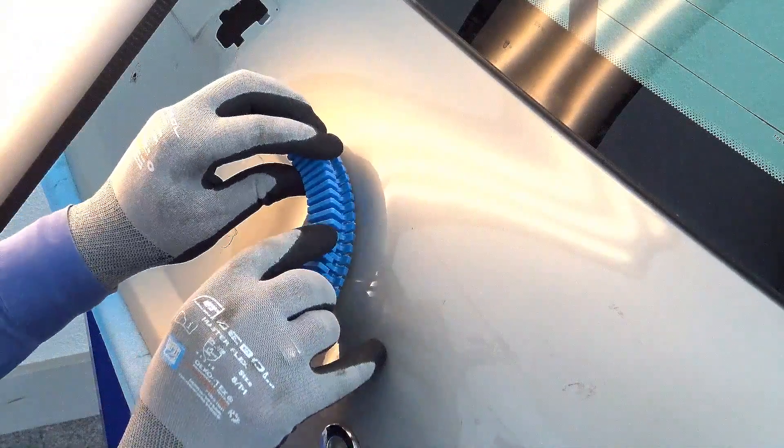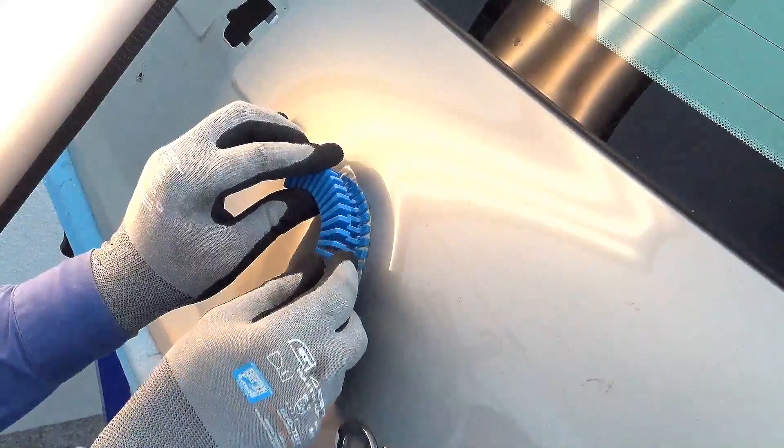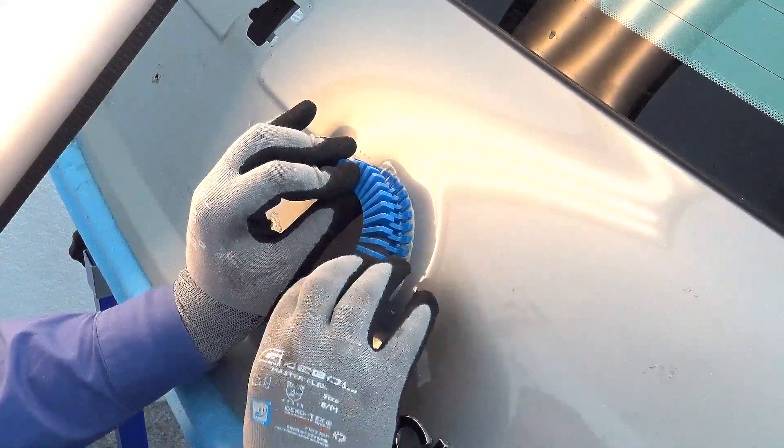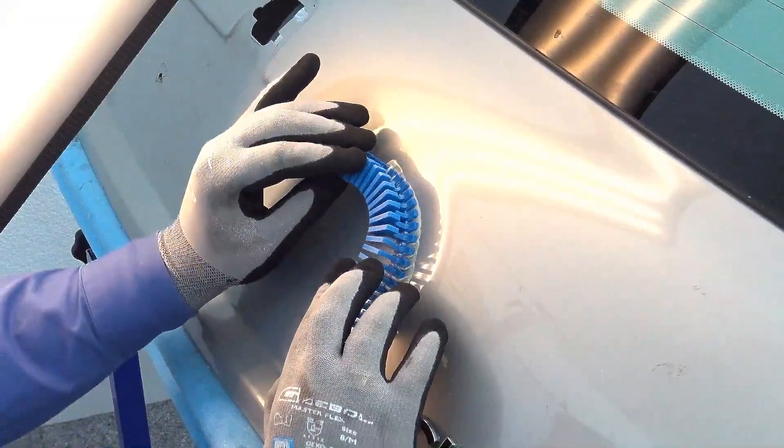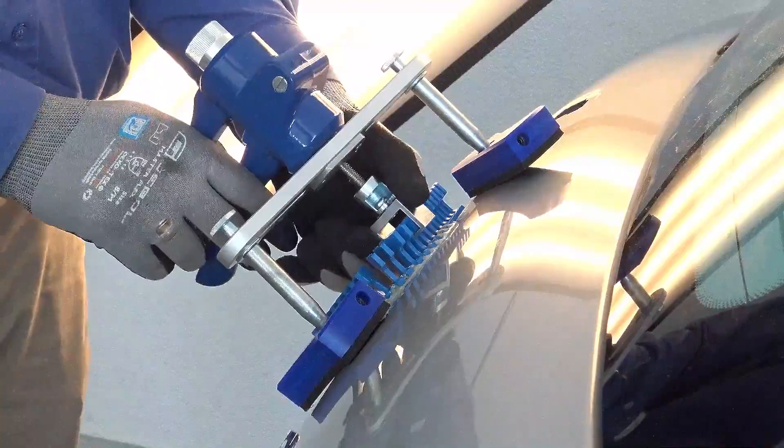Also for damages on round areas like the trunk in this example. Apply the Speedline 16R. Let it cool off. Apply the Speedline puller and pull out the damage.